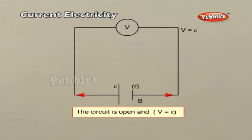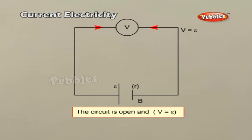Terminal Voltage: When no current flows through the cell, the circuit is said to be an open circuit. In such a case, the potential difference across the terminals of the cell — called terminal voltage V — will be equal to the EMF epsilon of the cell, because no current flows through the electrolyte and there is no potential drop across the internal resistance. A voltmeter connected across the terminals in an open circuit reads the EMF. That is, terminal voltage V equals EMF epsilon.